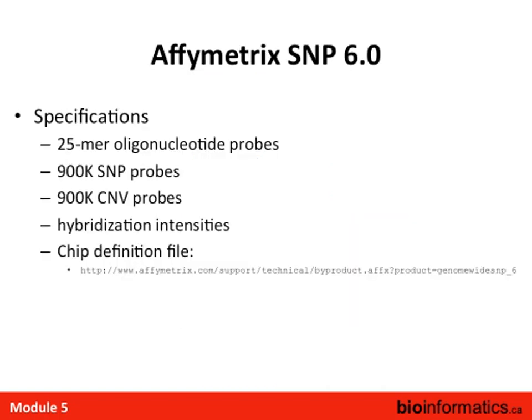The Affymetrix SNP-6 array uses 25-mer oligonucleotide probes. There are 900,000 SNP probes measuring two alleles, differing at the centering base at the polymorphic site. There are also 900,000 CNV probes that just measure total copy number at a location, not measuring two different SNPs. The way it works is measuring hybridization intensities, similar to gene expression microarrays.